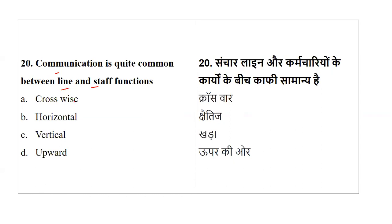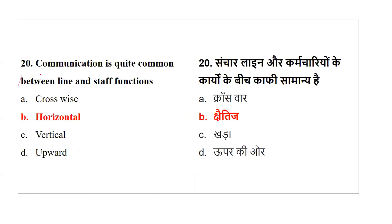Coming to the last question for the day: communication is quite common between line and staff functions in the form of what — crosswise, horizontal, vertical, or upward? The one which is quite common between line and staff is horizontal communication, as they belong to the same level or department. So horizontal communication is very common between line and staff.